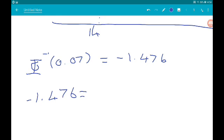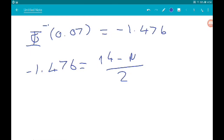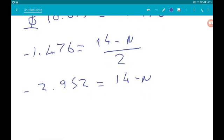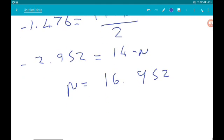Now remember z is equal to x bar minus mu over sigma. So here x bar is 14, 14 minus mu over the standard deviation sigma. So for us that's 2. If we multiply both sides by 2, we get minus 2.952 is equal to 14 minus mu. And then from that, we get mu is 16.952. It's a 2-sig fix. That is 17. Boom.